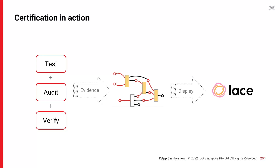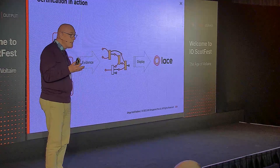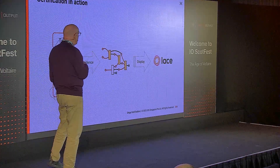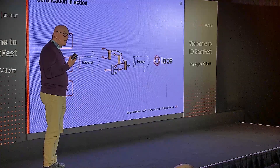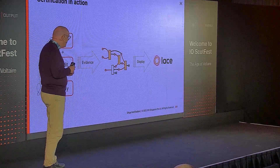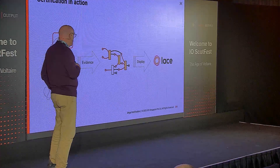So that's said a bit about the technologies at levels 1, 2, and 3 that produce this evidence. What does certification look like in action? We test, we audit, we do verification, and that evidence we can then place on the blockchain. We're in the process of building a CIP to describe that standard — with the certification working group — so that anyone can adhere to it. It's not a private standard; it's an entirely public, community-led standard.